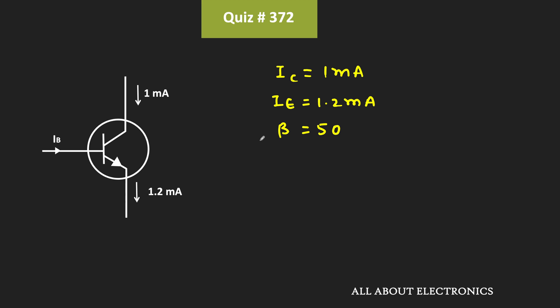Since this emitter and the collector currents are non-zero, that means the transistor is definitely not operating in the cutoff region. Because if it is operating in the cutoff region, then IC and IE would be around 0. That means either this transistor is operating in the active region or it is operating in the saturation region.